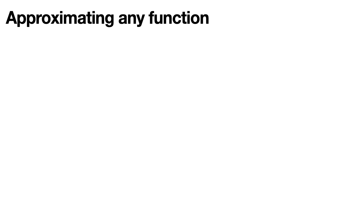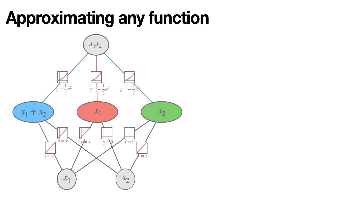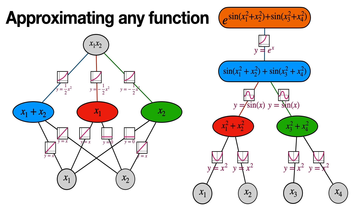In the next video I'm going to tell you more about how to represent mathematical functions. For example, here's a network that represents the product of x1 and x2, and here's one that represents e to the sine of x1 squared plus x2 squared plus sine of x3 squared plus x4 squared. The Kolmogorov-Arnold theorem is one of the most beautiful results I have seen in mathematics.